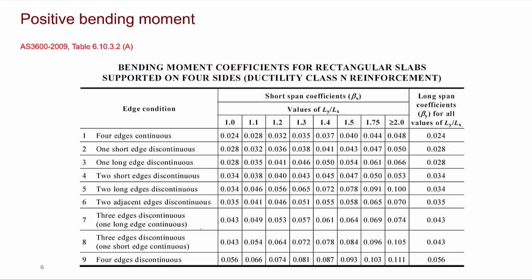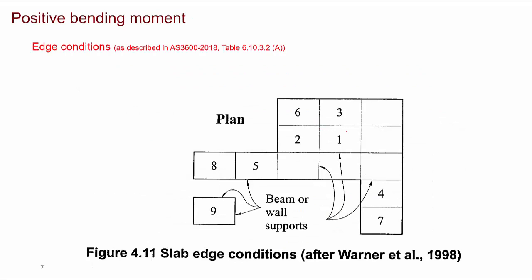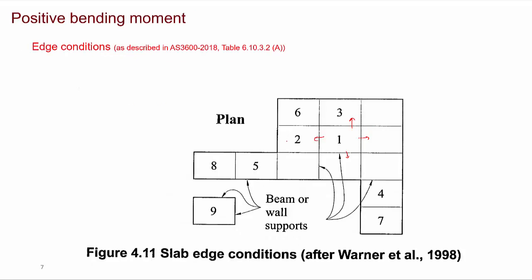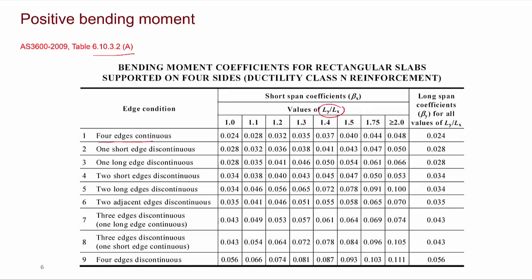There are nine different possible edge conditions for two-way slabs from which beta x and beta y are obtained. For example, the first edge condition is four edges discontinuous — a standalone slab. Slab 1 has four sides continuous, meaning there are slabs continuing in all four directions. From the table 6.10.3.2a, beta x is found based on the ratio Ly over Lx, where Ly is the longer span. If one short edge is discontinuous, that is slab number 2, with three edges continuous, beta x is obtained accordingly. For condition number 5, two long edges are discontinuous but short edges are continuous. For condition 9, all four edges are discontinuous with no continuation on any side.